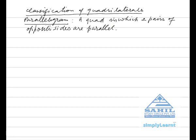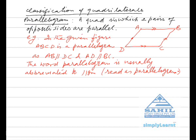Classification of Quadrilaterals. A quadrilateral in which two pairs of opposite sides are parallel is called a parallelogram. For example, in the given figure ABCD is a parallelogram as AB is parallel to DC and AD is parallel to BC. The word parallelogram is usually abbreviated as parallelogram.